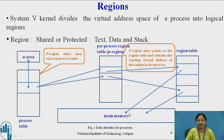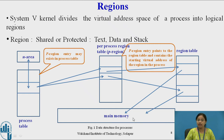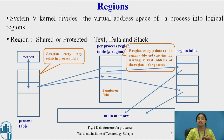The address is then located in physical memory. The region table does not contain only the virtual address — it also contains information about which type of region it is (text, data, or stack), and whether the region is shared or protected. Along with this, the P region also contains a permission field, which gives information about what type of permission the process has set for this region: whether it is read-only, read-write, or read-execute.